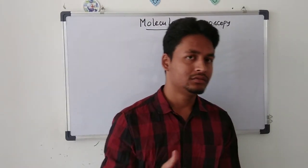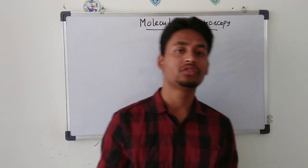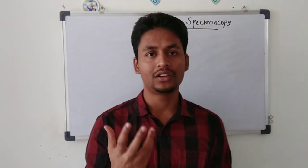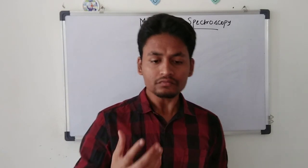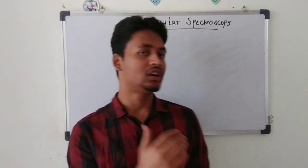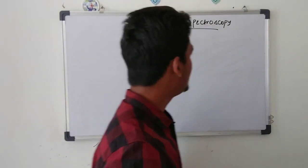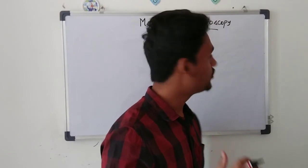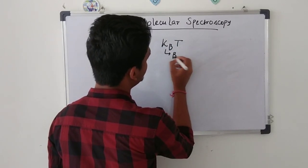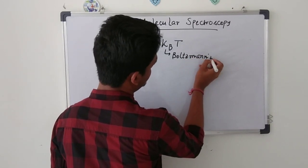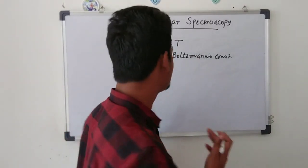You will not find translational spectroscopy. Why? Because any molecule or atom has three types of motion: translational, rotational, and vibrational. For rotational and vibrational motion we have spectroscopy, but not for translational. At room temperature there is always some thermal energy available, called kBT, where kB is the Boltzmann constant.